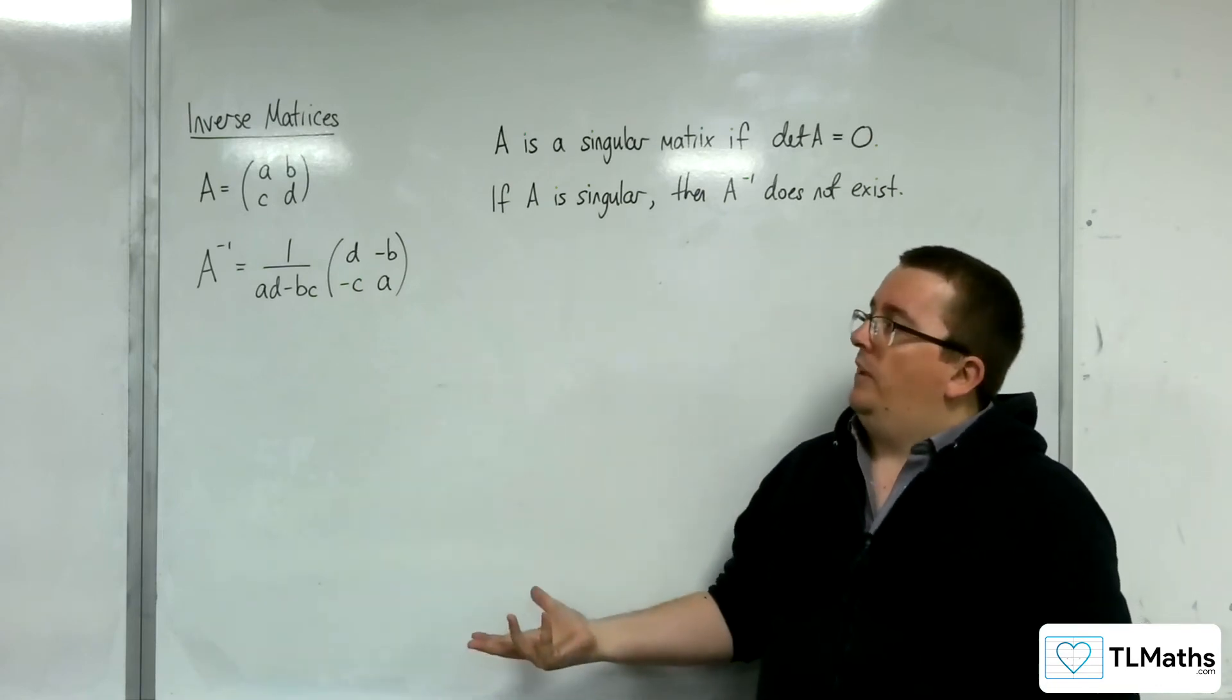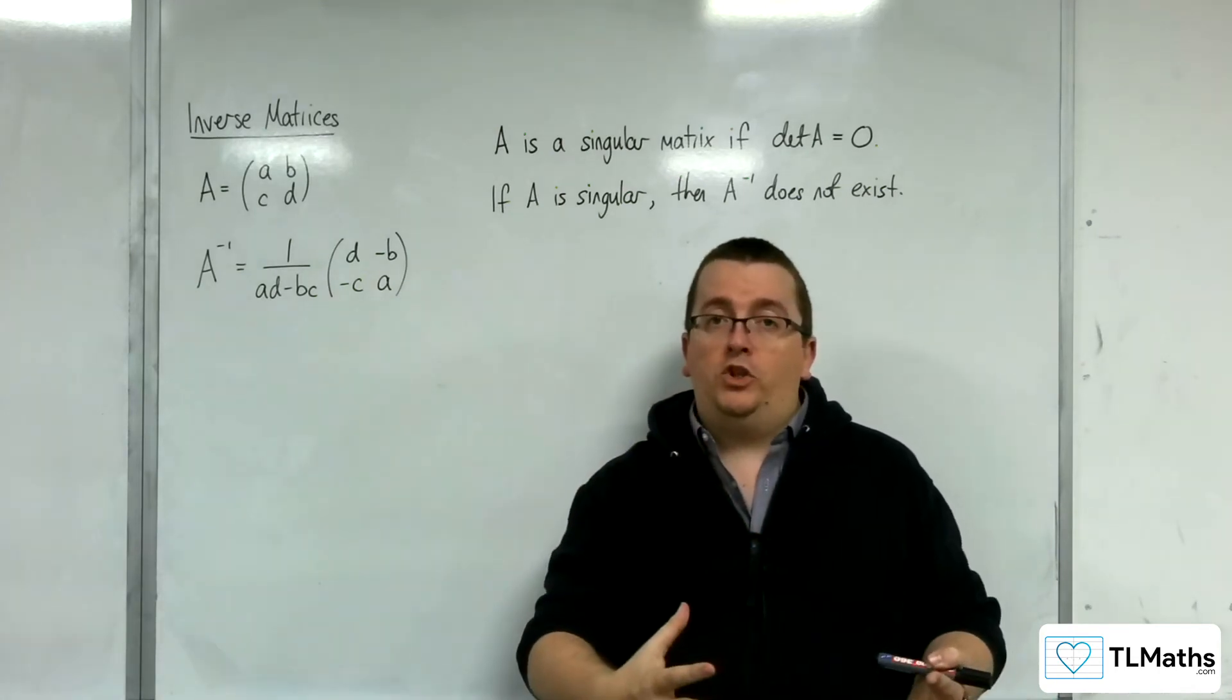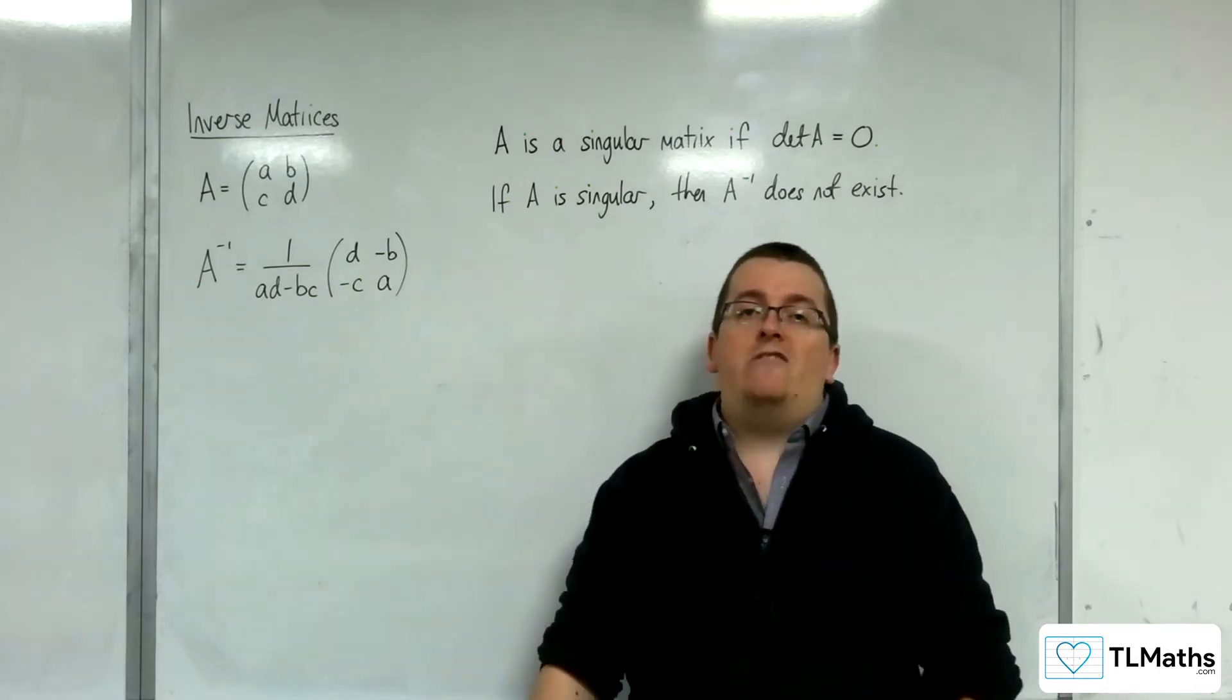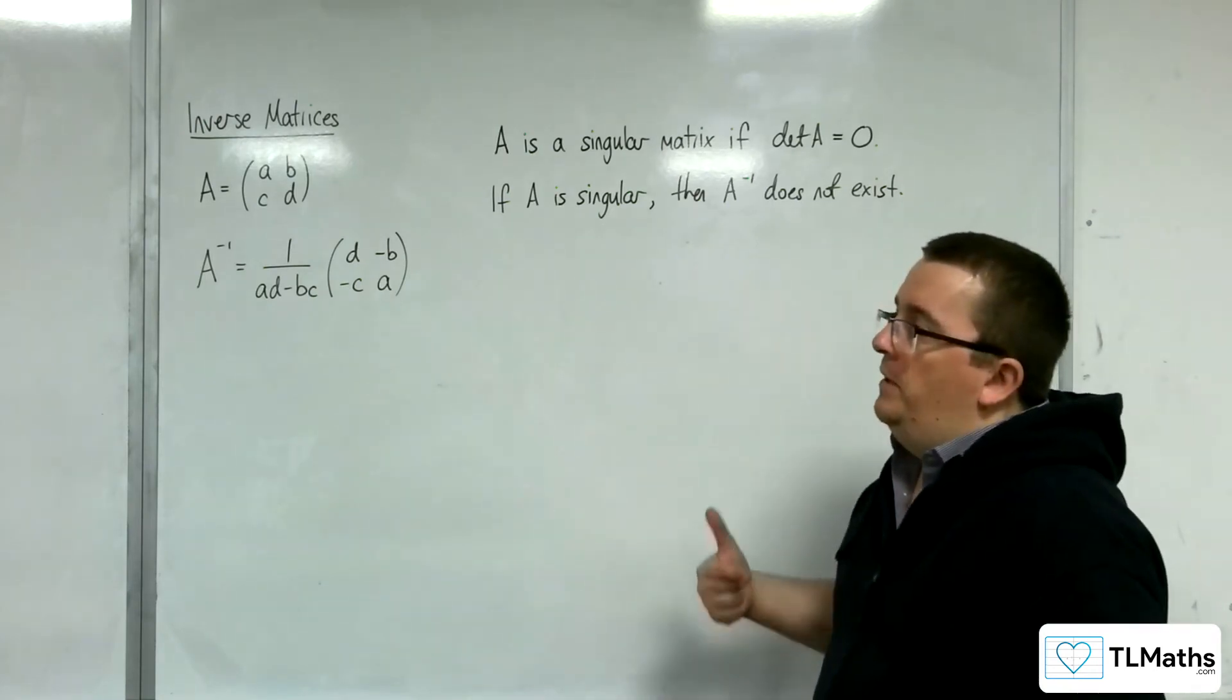So, if the matrix A had a determinant of 2, then once it is applied to a shape, it would double the area of that shape once applied.